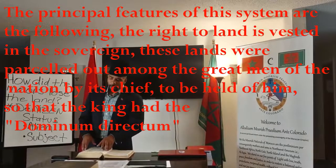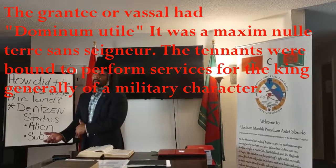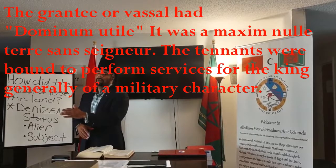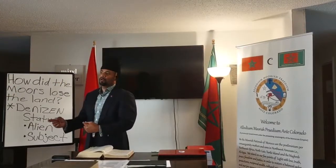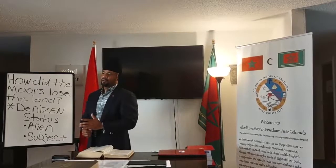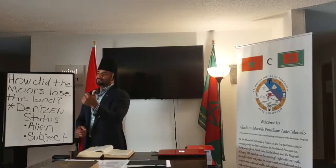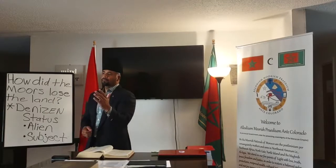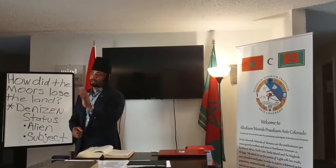First things first. Now that we understand hypothecation and escheat, we must understand the other words that allude to slavery. How did they get the Moors to take on brands that subjugated them? And how did the colonists give themselves de facto titles that gave them a false superior status — not acceptable by international terms as it relates to nationality? Because white is not a nationality.